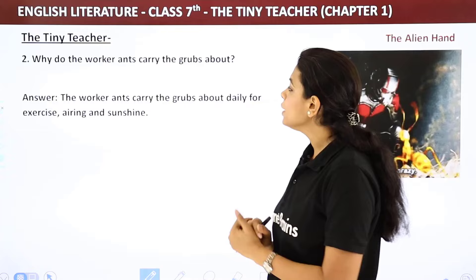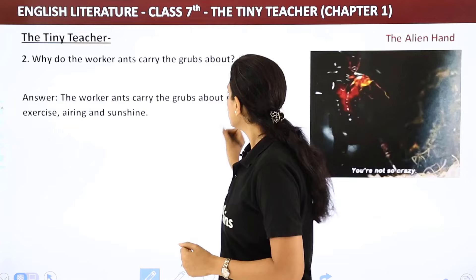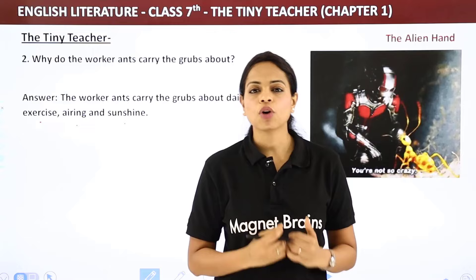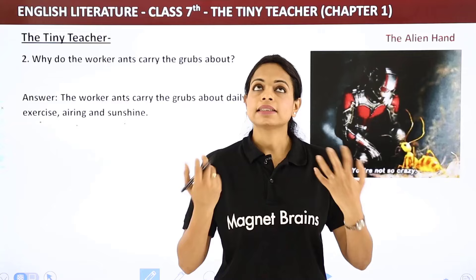Why do worker ants carry the grubs about? After feeding them, workers take the grubs out for exercise, airing, and sunshine. Just as vitamin D, exercise, and fresh air are important for us, they are equally important for the tiny grubs. So worker ants take them outside daily for sunlight, exercise, and fresh air.